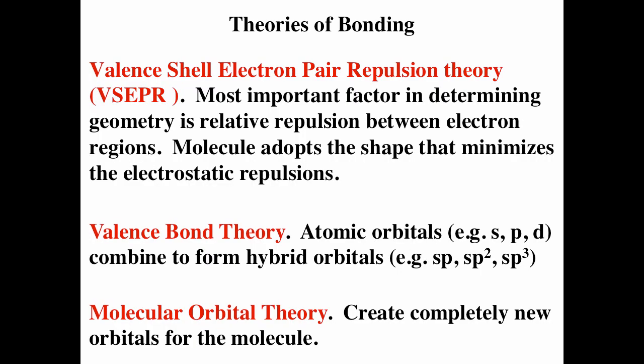In summary: VSEPR says a molecule takes the shape that minimizes repulsion between regions of electron density. Valence bond theory says atomic orbitals are changed to hybrid orbitals, explaining the shapes from VSEPR theory. Molecular orbital theory creates brand new orbitals for the molecule by solving the Schrödinger equation, assuming positions for the nuclei and iterating to find the minimum energy, giving the most stable geometry.